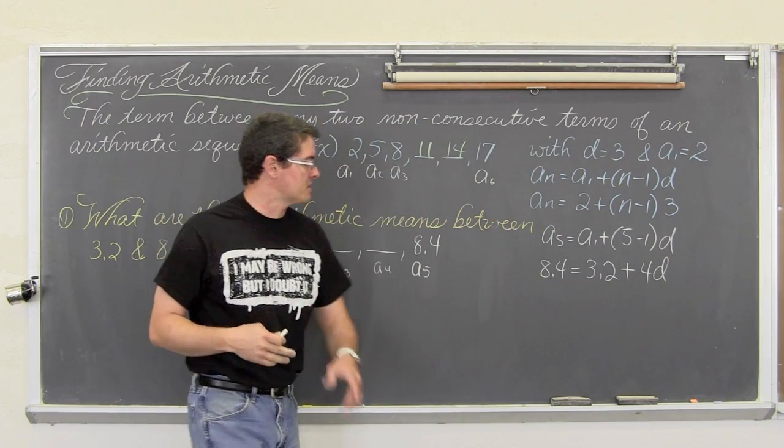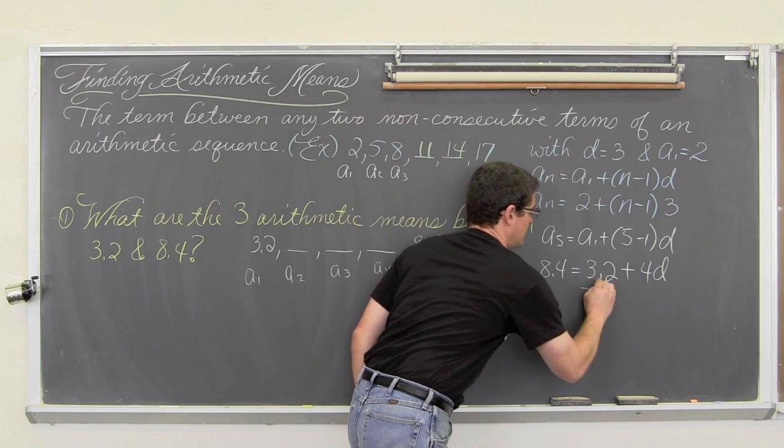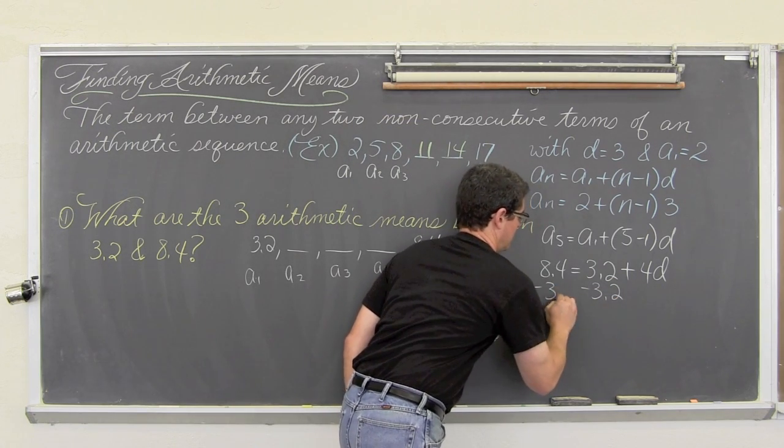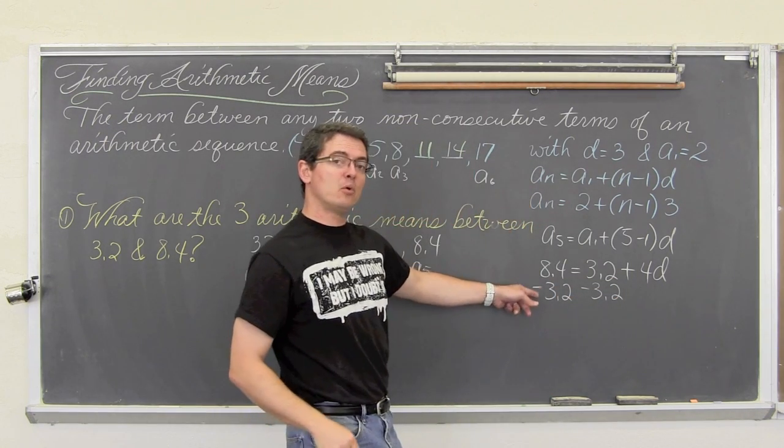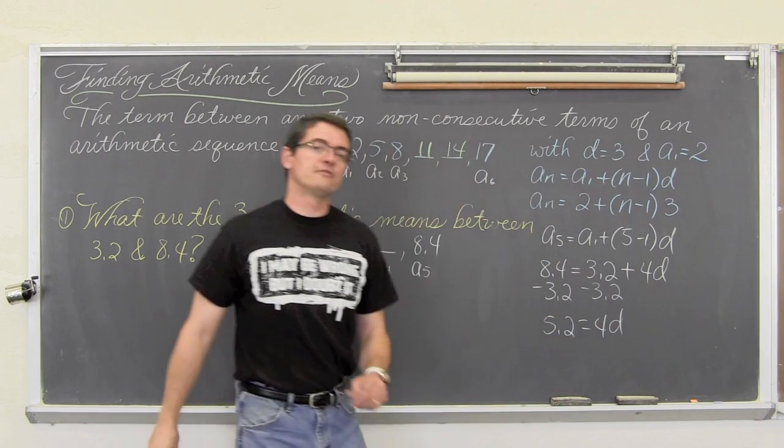Okay, so we are going to solve this for d and find our common difference. We are going to subtract both sides by 3.2 and get 5.2 is equal to 4d.